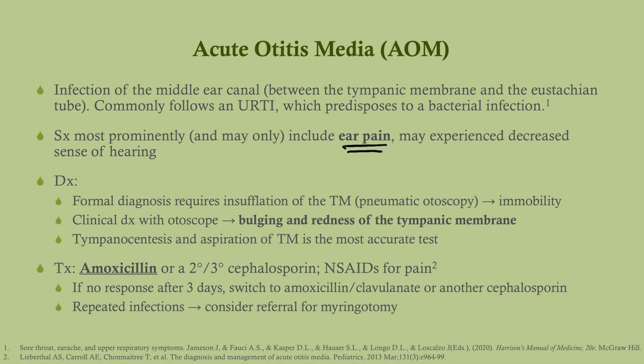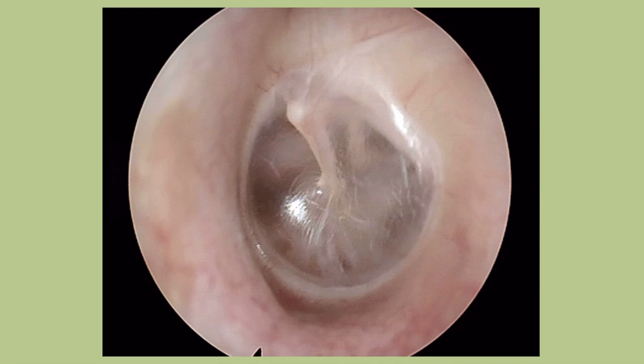The myringotomy tubes story: growing up in Minnesota, my cousin had tubes in his ears. When swimming at the lake, he had to put what amounts to silly putty in his ears to prevent water from getting into the middle ear. I was about eight or nine years old and playing with it until my aunt told me to stop. A normal tympanic membrane is fairly pale pinkish in color, with the malleus visible — a pearly-colored membrane.